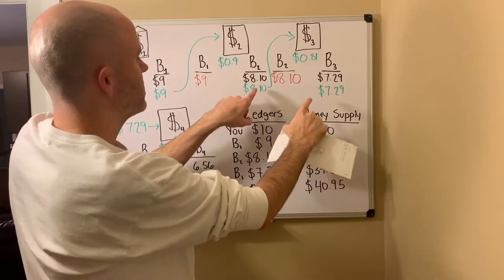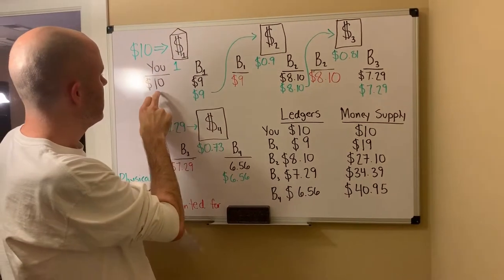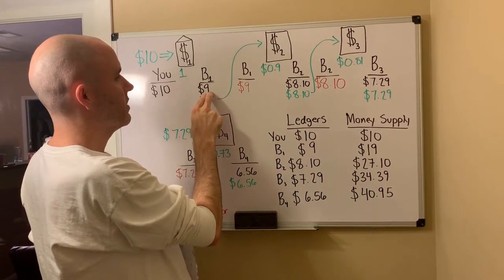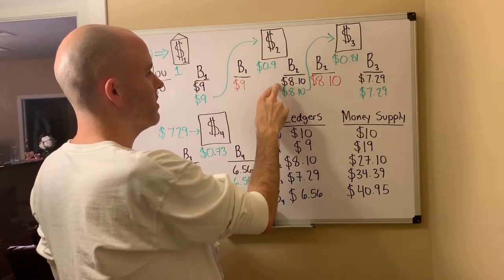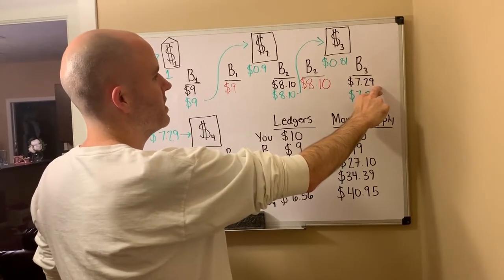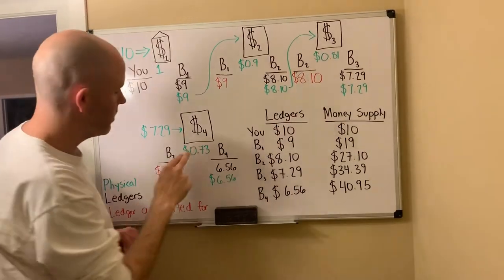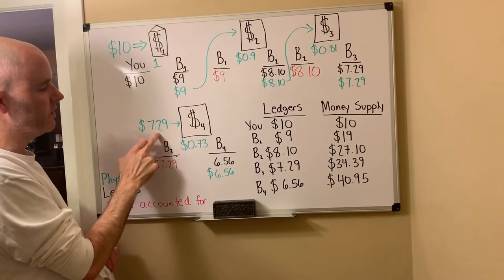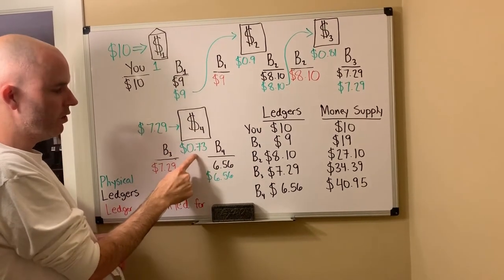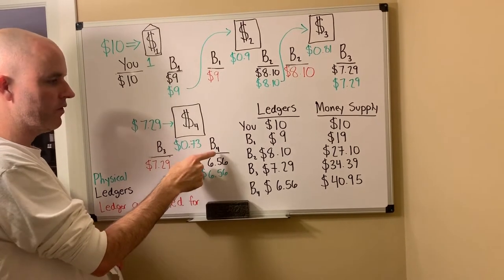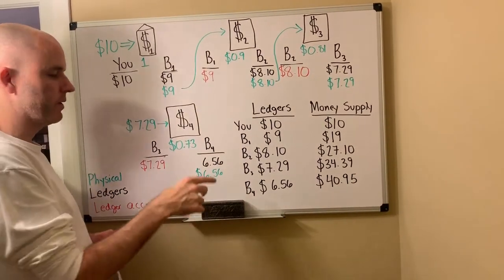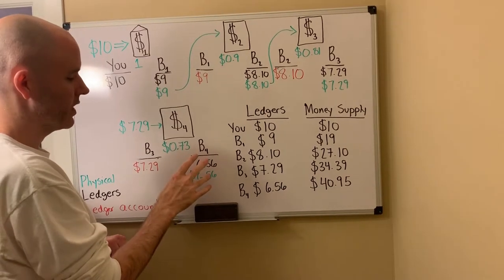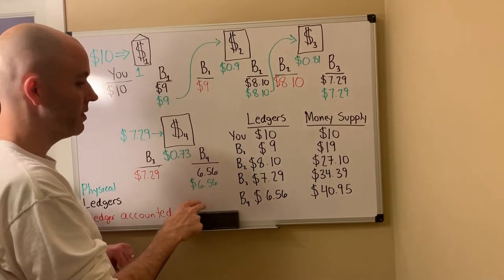So here's all of our ledgers up to date. On your ledger it shows that you have $10. On borrower number one's ledger, $9. Borrower number two's ledger, $8.10. Borrower number three's ledger, $7.29. And going further, borrower number three deposits the $7.29 — physical money — into bank number four. They hold a physical $0.73 of that, and then borrower number four comes along — borrowing to build a rocket ship — and borrower number four is the last person we're going to show before we calculate the money supply.